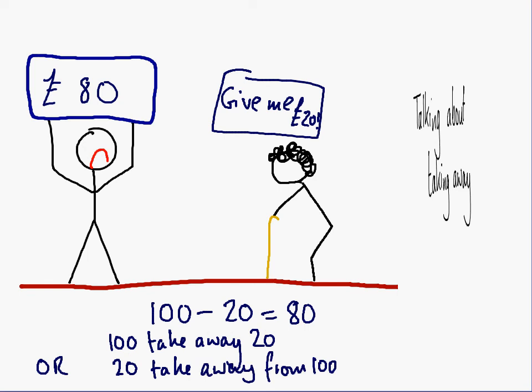But what I hear so many people saying, which is really difficult to understand, because I don't think they mean it when they say it, is they say, for a problem like this, 100 take away from 20. Now, that is possible to do. You can take 100 away from 20. Of course, you'll get a negative answer. But it's not usually what people mean when they say it.